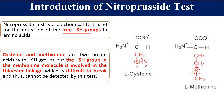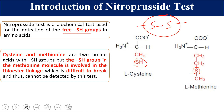Similarly, when two cysteines join together, we get cystine, which has a disulfide bond. This test also cannot detect that disulfide bond because it is a strong bond which cannot be easily broken. So the disulfide bond present in cystine cannot be detected by the nitroprusside test.